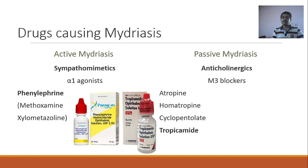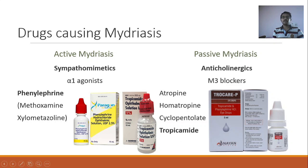When we use tropicamide, there is both mydriasis and cycloplegia, so patients will have both photophobia and blurring of vision. With atropine and homatropine, the duration of action is quite long — many days. For tropicamide, it is just three to four hours maximum. So often we combine phenylephrine and tropicamide to produce better mydriasis, since both drugs act by entirely different mechanisms and combining them leads to better mydriasis.